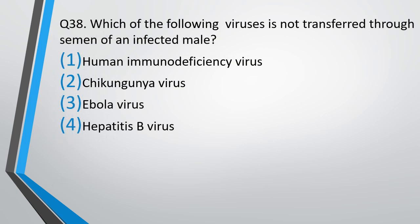Question number 38. Which of the following viruses is not transferred through semen of an infected male? HIV virus, Chikungunya virus, Ebola virus, or Hepatitis B virus? The correct answer is option 2, i.e. Chikungunya virus.